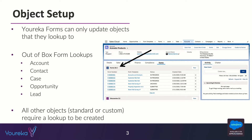In some cases you might have a different object that you want Eureka forms to be able to map information to, and that's totally okay. However, what you need to do is create a lookup relationship from the form object to that desired object. For example, if you're using Field Service Lightning and you want forms to map information to work orders, you need to create a lookup relationship on the form object after you install Eureka, and then you can use field links.